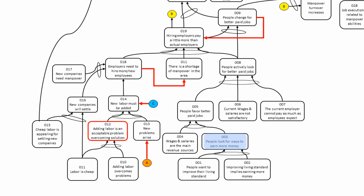If people look for ways to earn more money, and wages and salaries are the main revenue sources, then entity five: people favor better paid jobs. If people favor better paid jobs, and current wages and salaries are not satisfactory, and the current employer cannot pay as much as employees expect, then people actively look for better paid jobs.